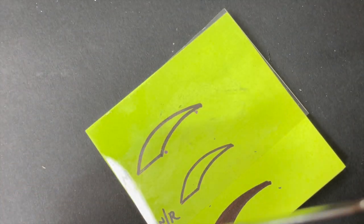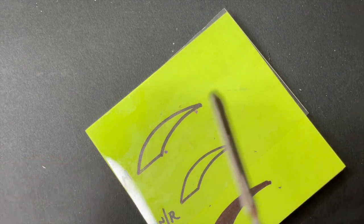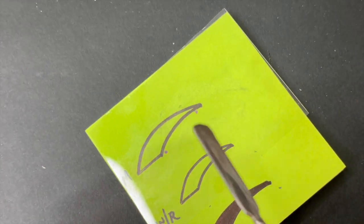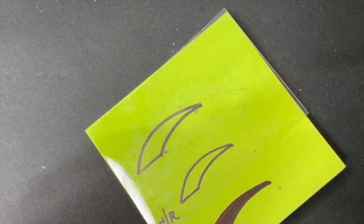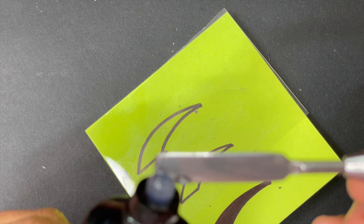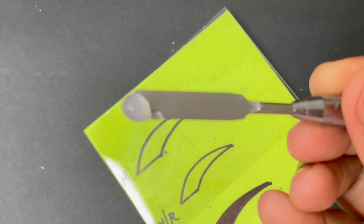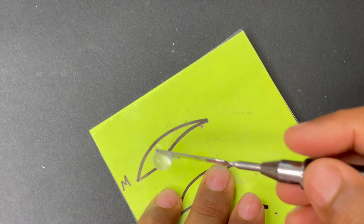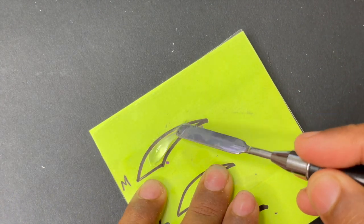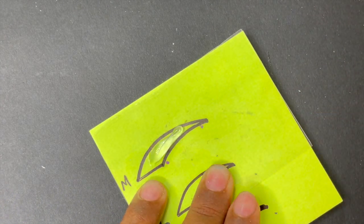Once this was done, I took an acetate sheet—this is a transparent plastic sheet—and I put it on top of it. This way I can see the drawing that I drew on the paper, and at the same time my poly gel won't be sticking to the paper. I can easily take it off once it's completely cured.